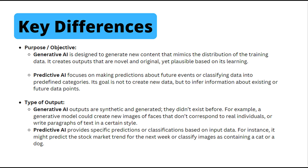If we move on to key differences, the two key differences I wanted to highlight were purpose and objective and type of output. For purpose and objective, generative AI is designed to generate new content that mimics the distribution of training data — it creates outputs that are novel and original, yet plausible based on its learning. The purpose and objective of predictive AI focuses on making predictions about future events or classifying data into defined categories. Its goal is not to create new data, but to infer information about existing or future data points.